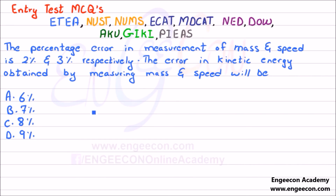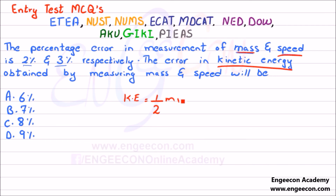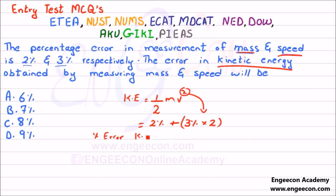Here we have a simple MCQ relevant to entry tests. The percentage error in measurement of mass and speed is 2% and 3% respectively. Find the error in kinetic energy obtained by measuring mass and speed. Kinetic energy is KE = ½mv². The percentage error in KE equals the percentage error in mass (2%) plus the percentage error in speed (3%) multiplied by its power 2, giving 2% + 6% = 8%.